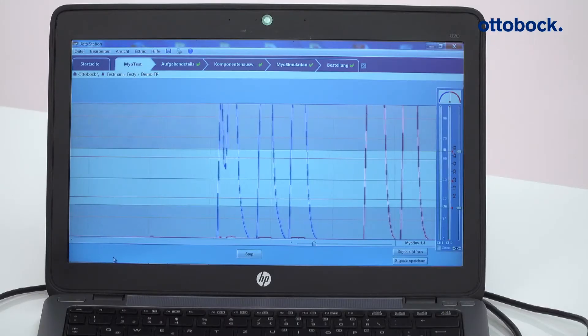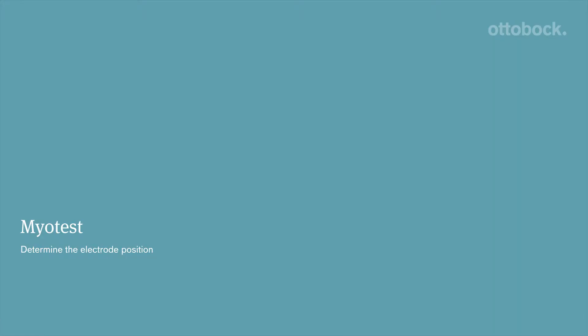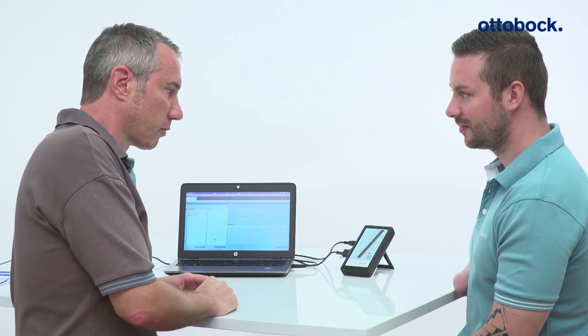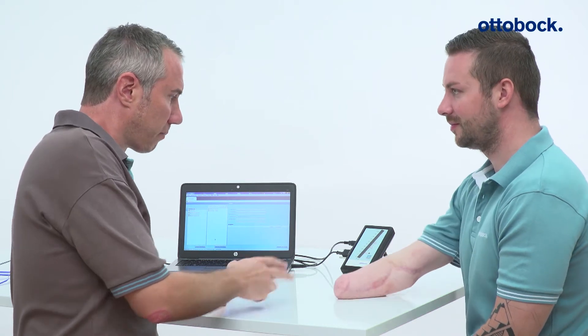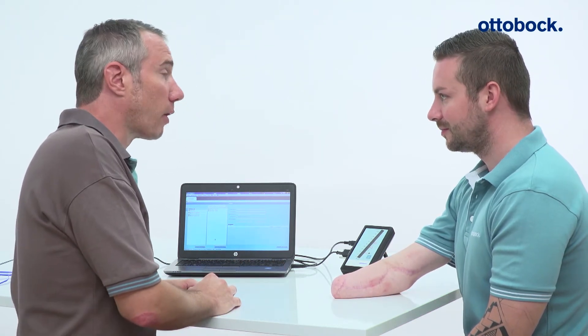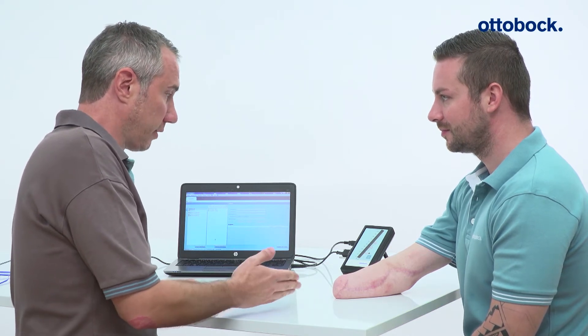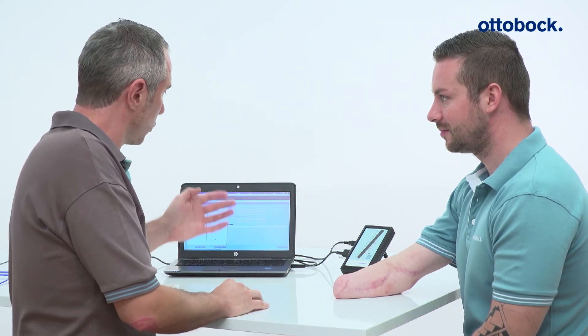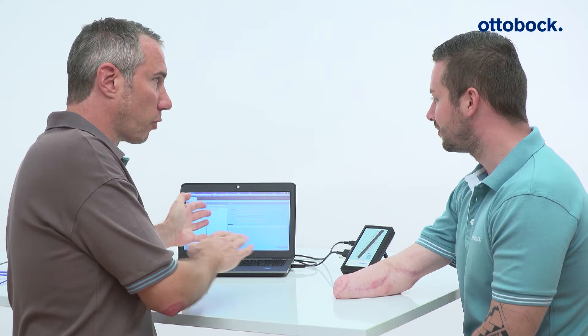Switch on the myoboy and test the connection by touching the contacts of both electrodes. Your preparation is now complete. Before starting the myotest, explain the process to the user and ensure they are comfortable. A careful, accurate evaluation of the myosignal and the corresponding adjustment is essential.